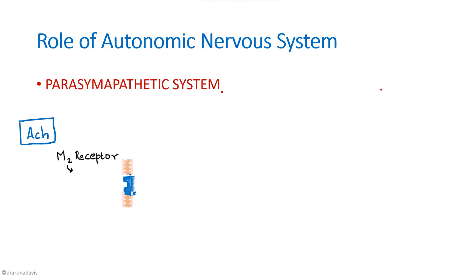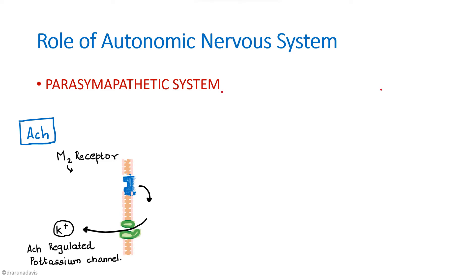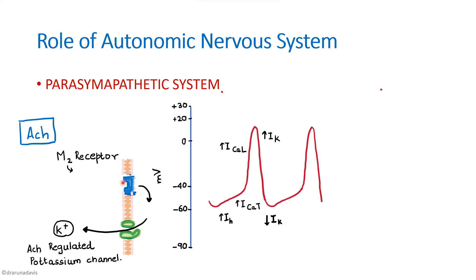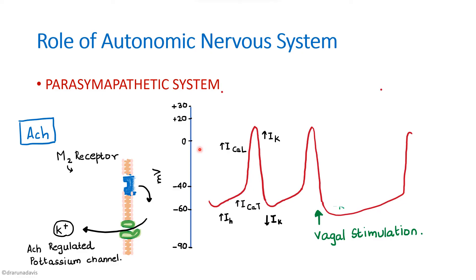Acetylcholine binds to M2 receptors on the SA node, causing opening of acetylcholine-regulated potassium channels. With these potassium channels open, the normal decline in potassium current does not occur. This decreases the slope of the prepotential, making it less steep, which in turn decreases the heart rate. This is the mechanism by which parasympathetic stimulation slows the heart rate.